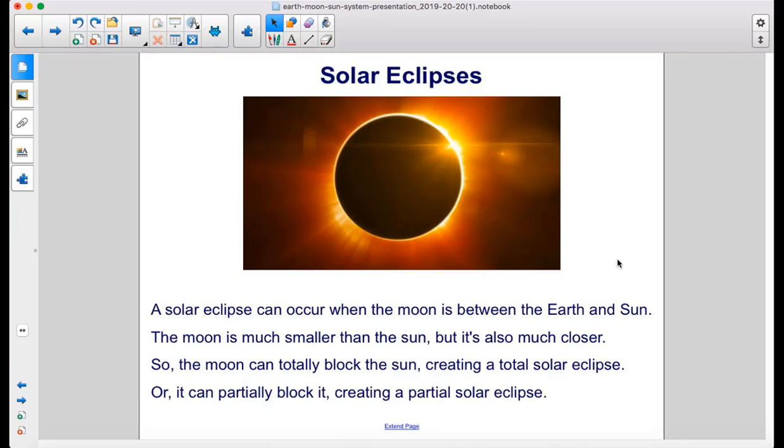So the moon can totally block the sun, creating a total solar eclipse, or it can partially block it, creating a partial solar eclipse.